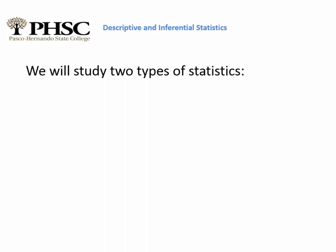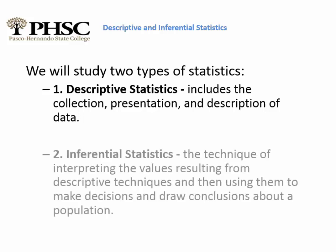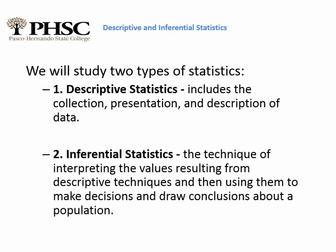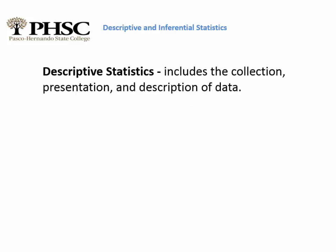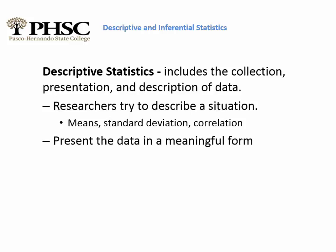We'll study two types of statistics in this course. The first is descriptive statistics, which includes the collection, presentation, and description of data. This is what a lot of people call exploratory data analysis — researchers try to describe a situation using things like means, standard deviation, or correlation, and then present the data in meaningful form using charts, graphs, or tables, since raw data doesn't really tell us much on its own.